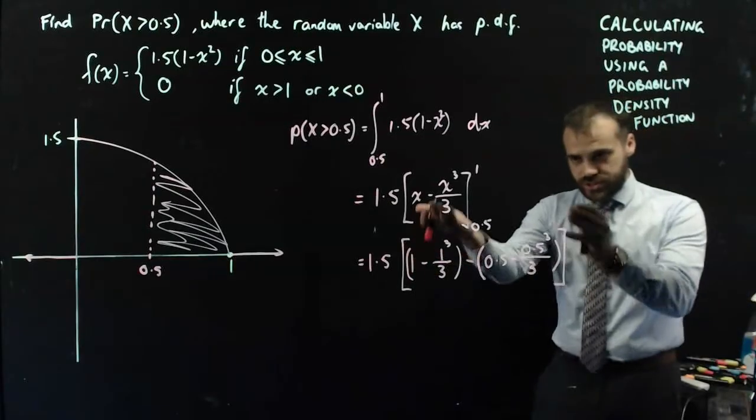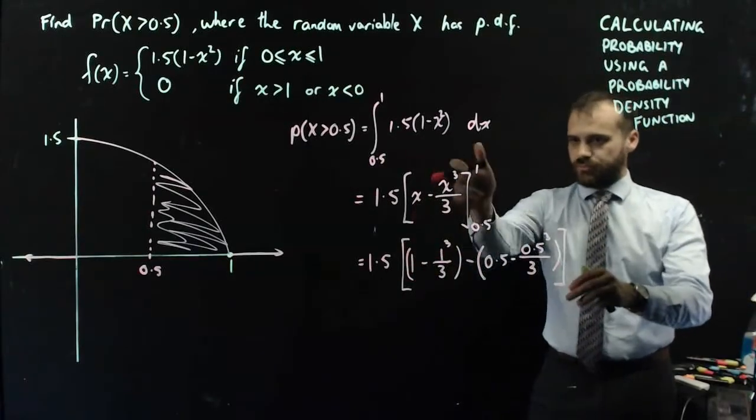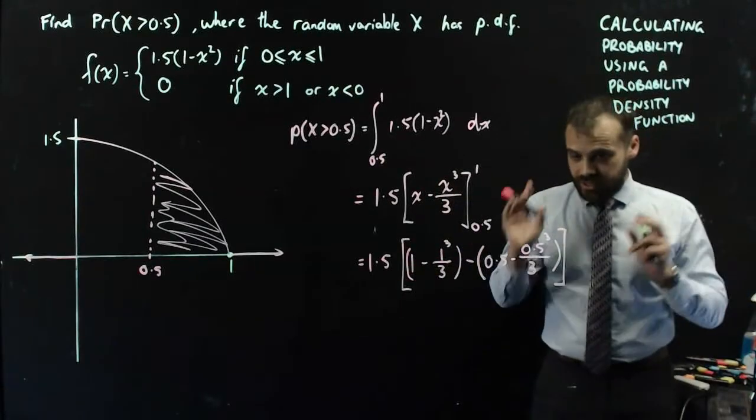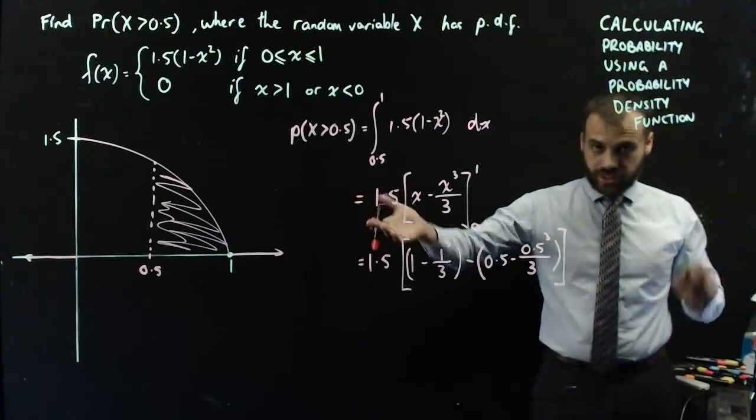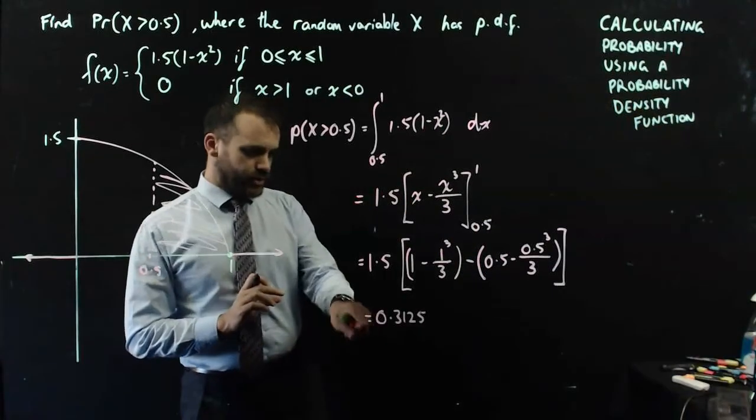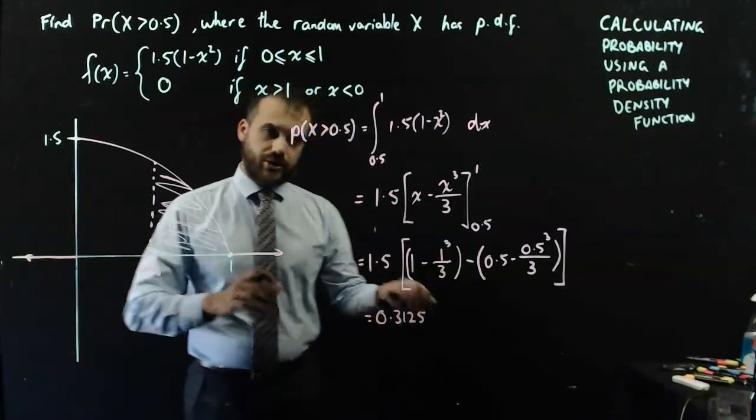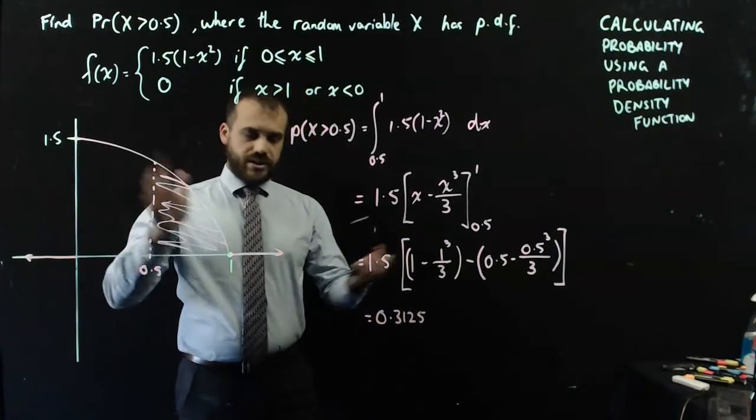So there's my integration step here. I've put 1 in, I've put 0.5 in, and now I'm just going to put that into my calculator, and I'm going to get an answer. And the answer I get is 0.3125.